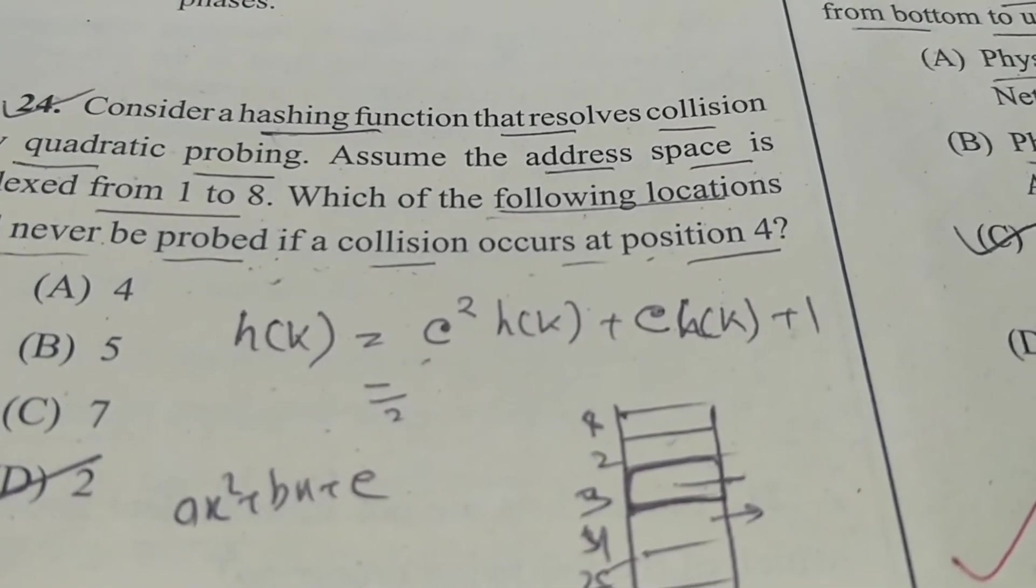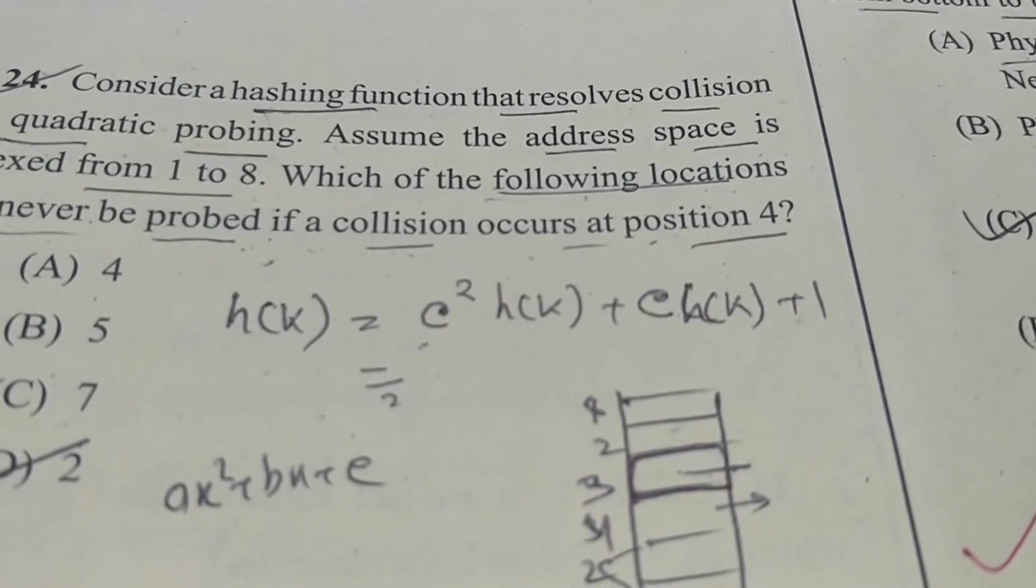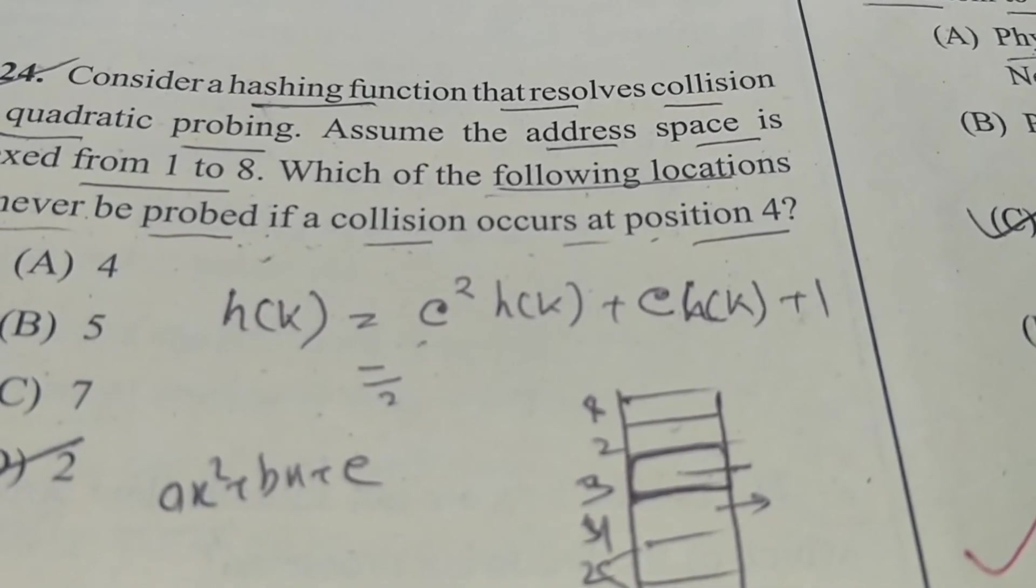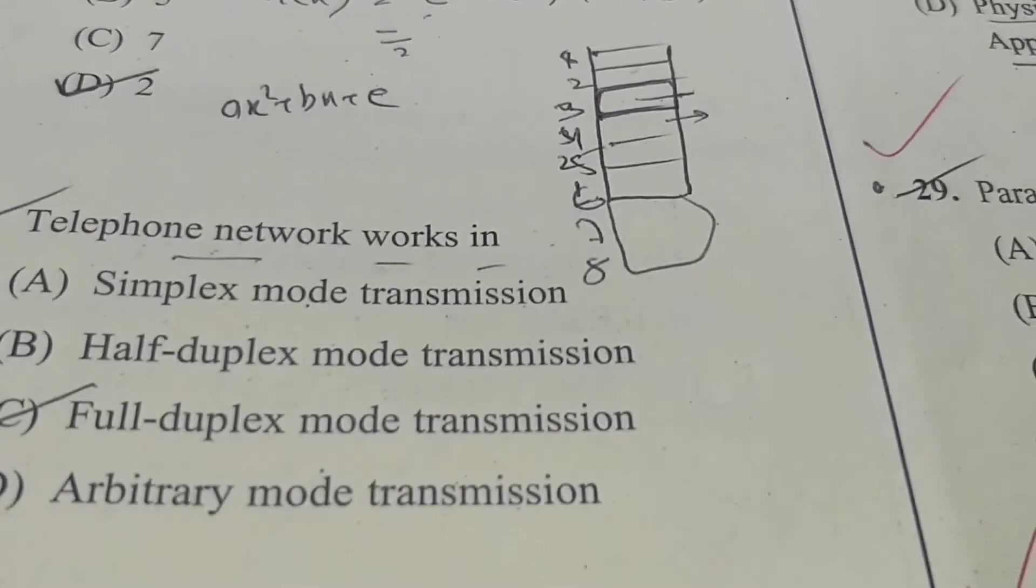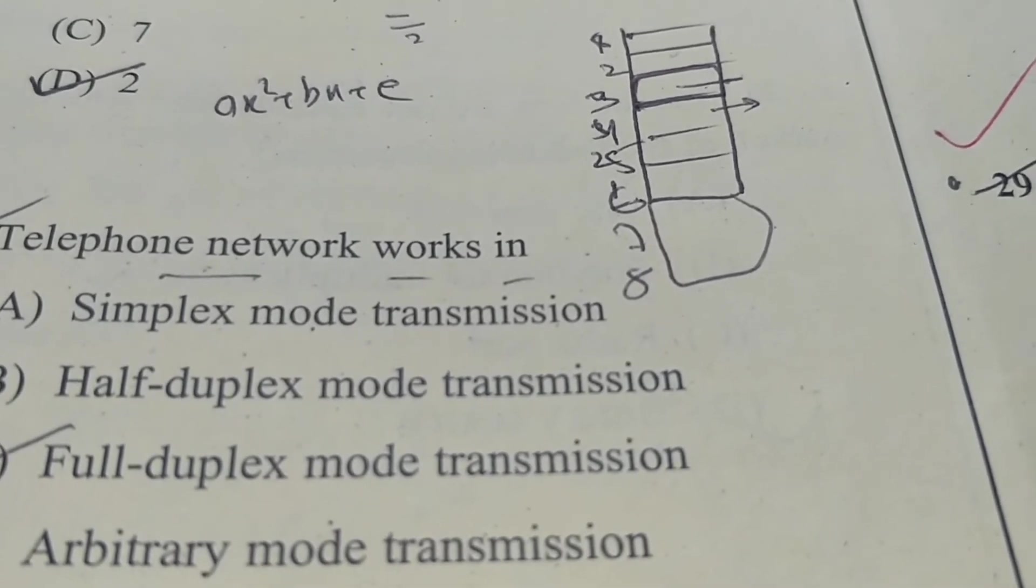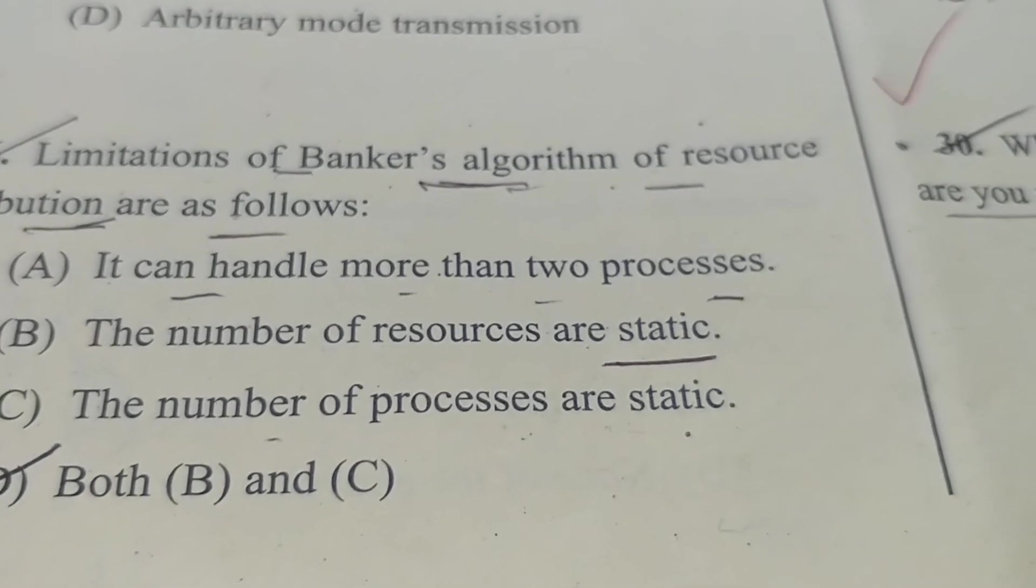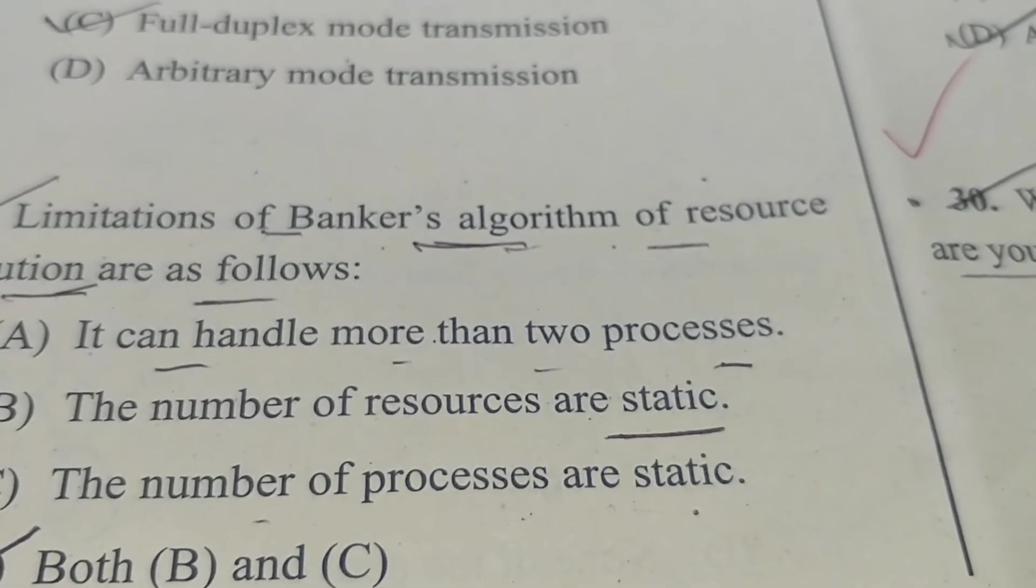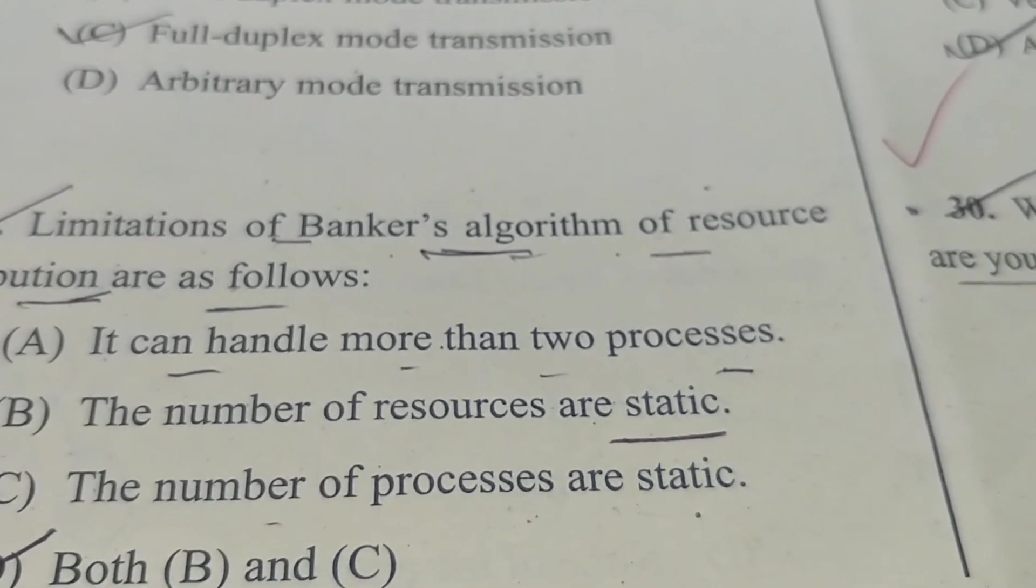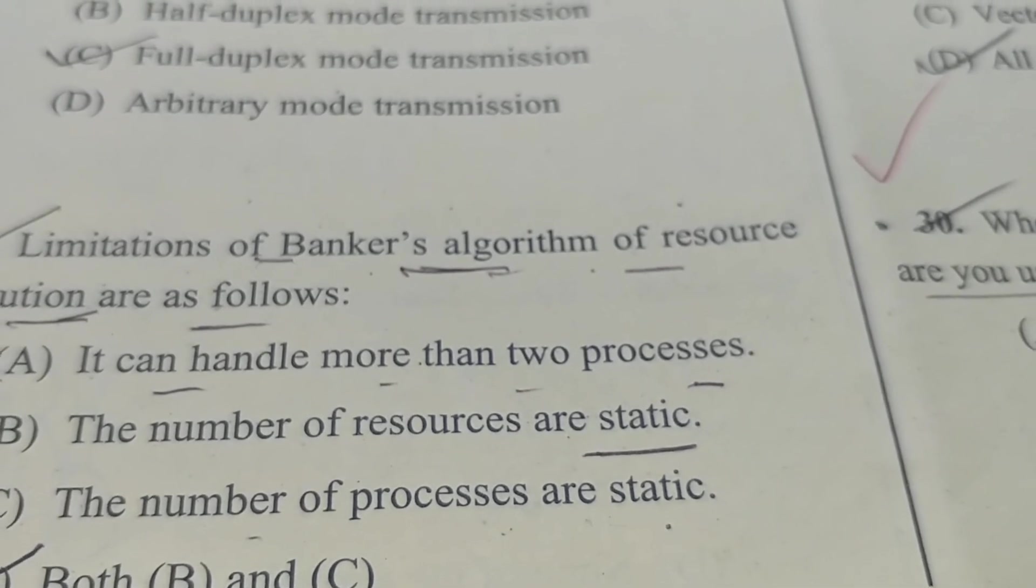Now the next question is on hashing. Consider a hashing function that resolves collision by quadratic probing. Assume the address space is indexed from 1 to 8. Which of the following locations will never be probed if a collision occurs at position 4? 4, 5, 7, 2. B is the correct answer. Now the next question 25: telephone network works in simplex mode transmission? No. Half-duplex mode transmission? No. Full-duplex mode? Yes. So C is the correct answer. Now the next question 26: limitations of banker's algorithm of resource distribution are as follows. It can handle more than two processes. The number of resources are static. The number of processes are static. So in banker's algorithm, the number of resources are static and the number of processes are static. These are the two limitations. So D is the correct answer: both B and C.